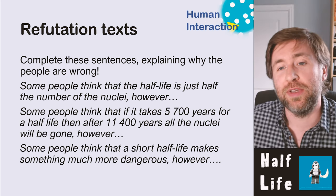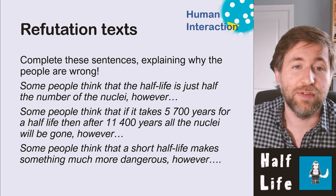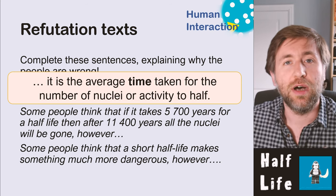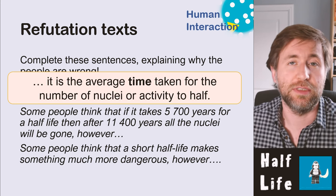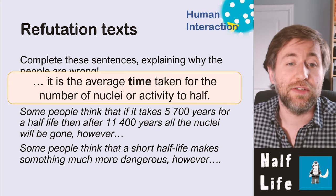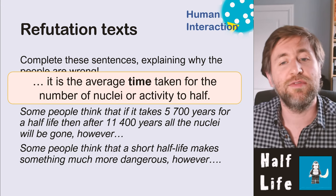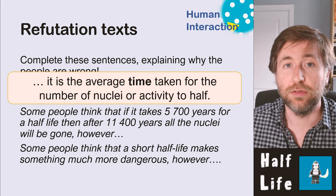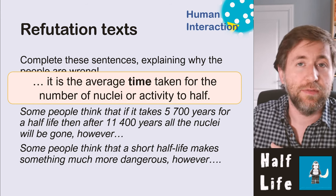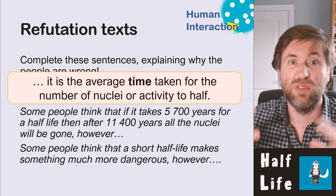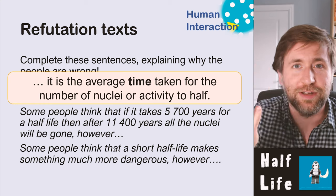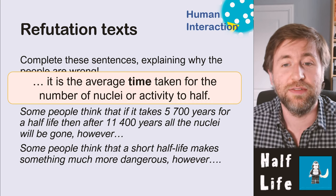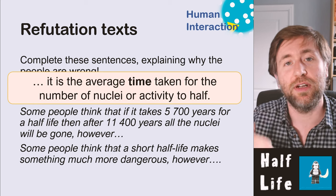Some people think the half-life is just half the number of nuclei. However, it's the average time taken for the number of nuclei or the activity to half — it's a measure of time. Some people think that if it takes 5,700 years for one half-life, then after 11,400 years all nuclei will be gone. This is a key misconception — many students think double the half-life is a 'full life,' but the number just keeps halving and halving.